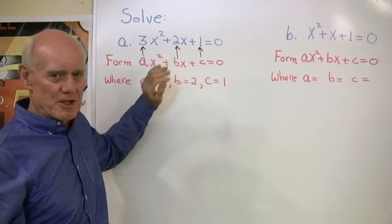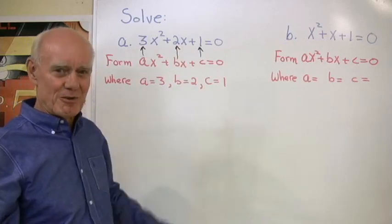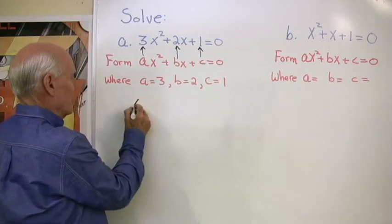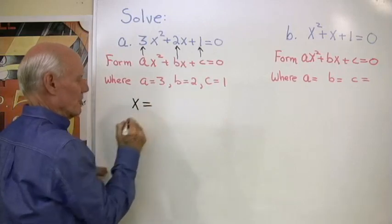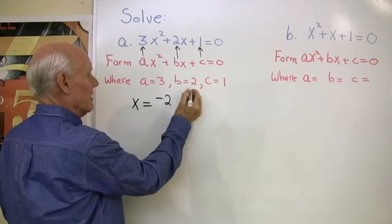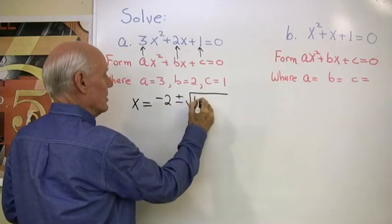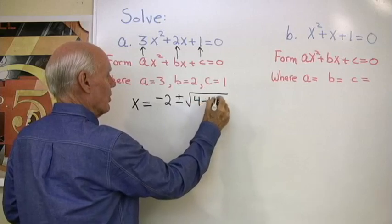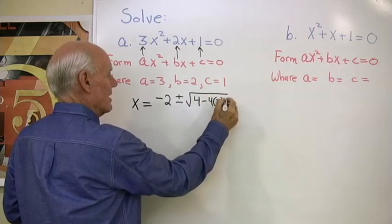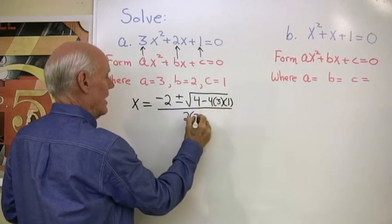So we can solve this equation by simply substituting these values of A, B, and C into the quadratic formula. So in that case, the solutions are going to be x equal negative B, so negative that, plus or minus square root B squared minus 4 times A times C, all divided by 2 times A.